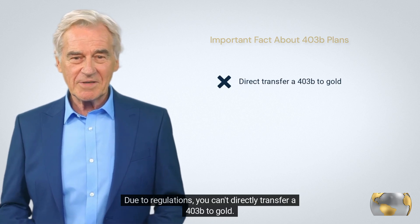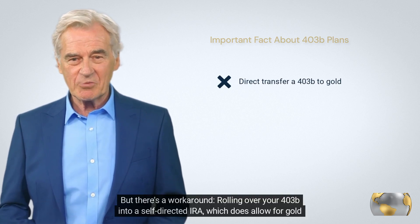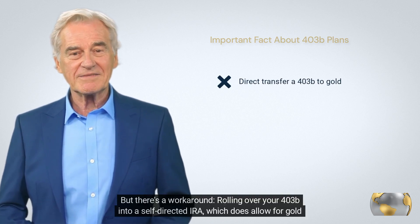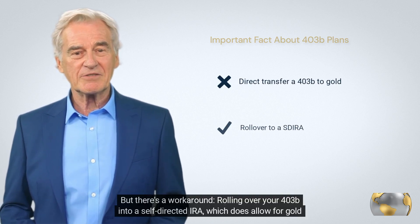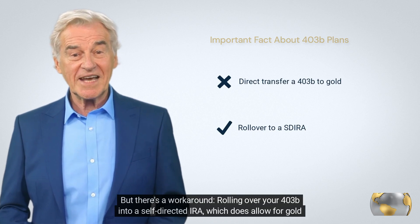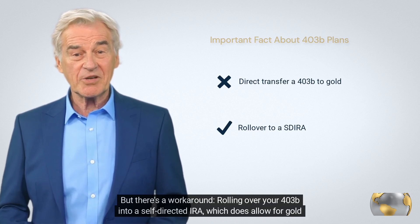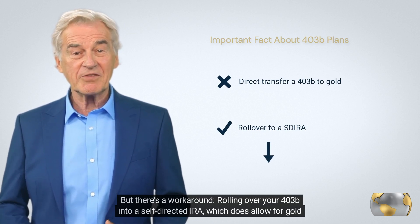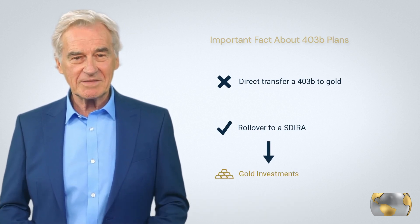Here's where it gets interesting: due to regulations, you can't directly transfer a 403b to gold. But there's a workaround — rolling over your 403b into a self-directed IRA, which does allow for gold investments.